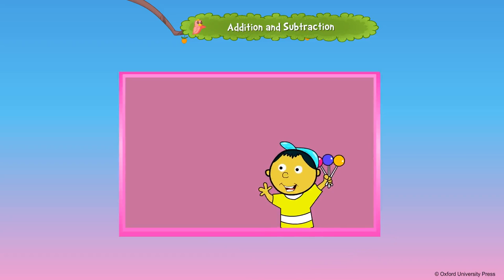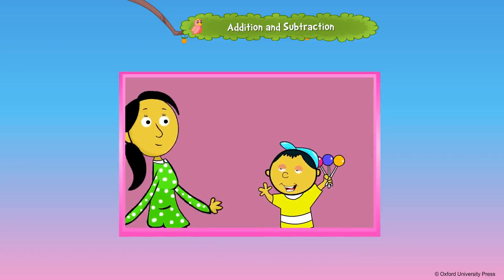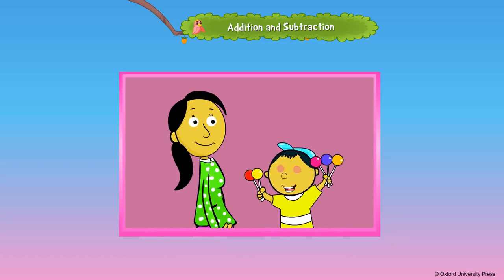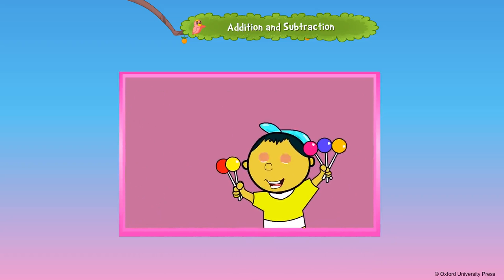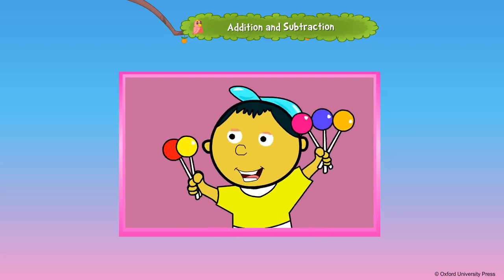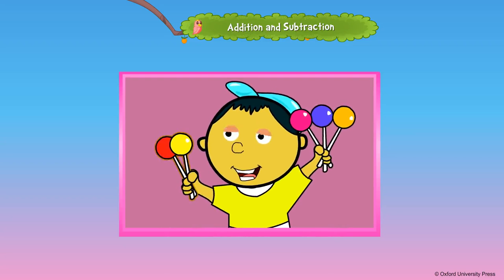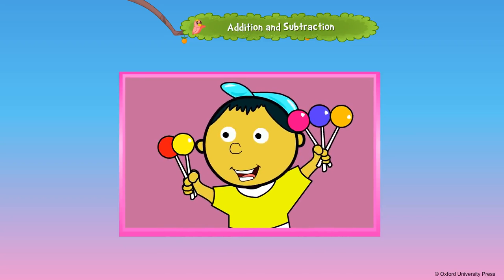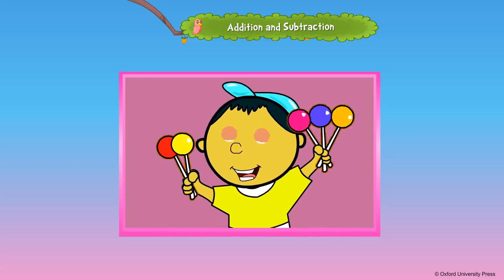John has three lollipops. His sister Daisy gives him two lollipops. Now John has three and two more lollipops. John has five lollipops altogether.